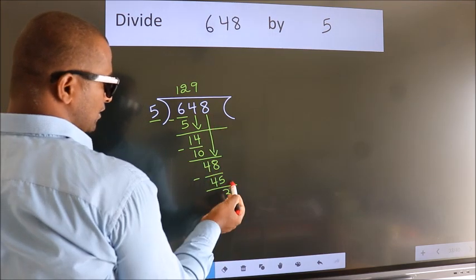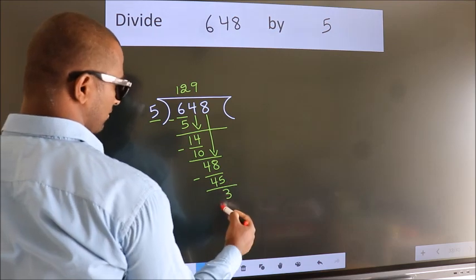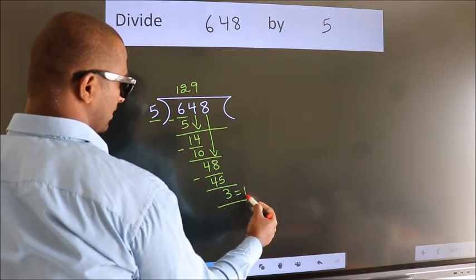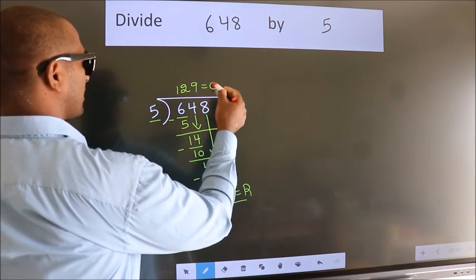No more numbers to bring it down. So we stop here. This is our remainder. This is our quotient.